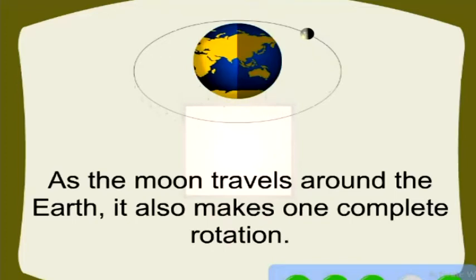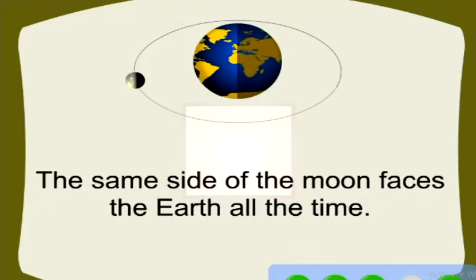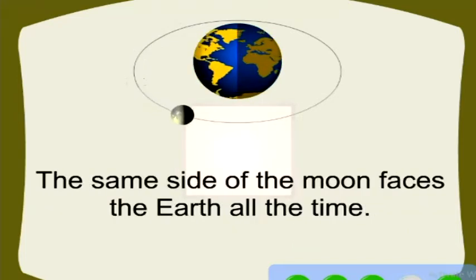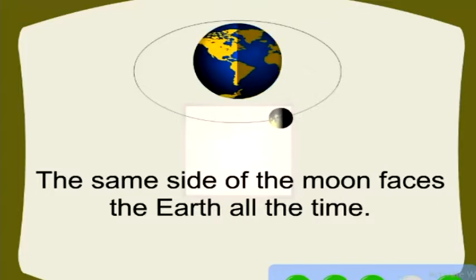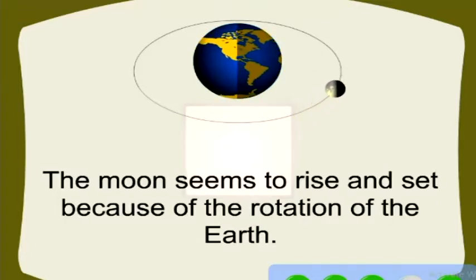As the moon travels around the Earth, it also makes one complete rotation. The same side of the moon faces the Earth all the time. The moon seems to rise and set because of the rotation of the Earth.